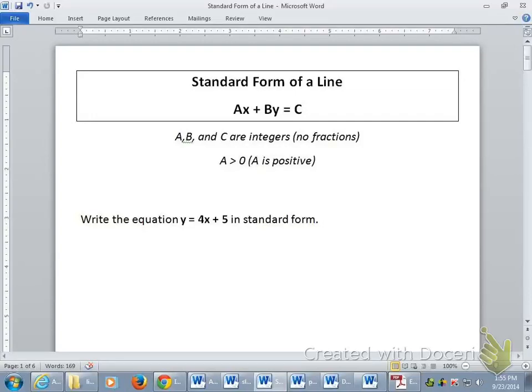We recognize that this equation is currently in y equals mx plus b form, which is slope-intercept form, which is great sometimes, but it's not the one we want. So we're going to change it from y equals mx plus b into standard form. We have to get the x and the y together on the same side.